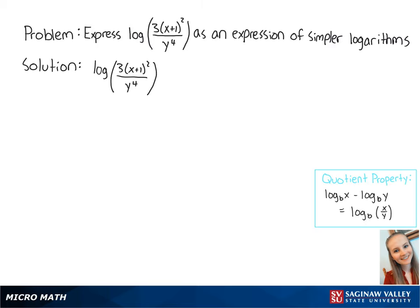First, we can use the quotient property to rewrite this as a subtraction of two logs. So this equals the log of 3 times x plus 1 squared minus the log of y to the fourth.